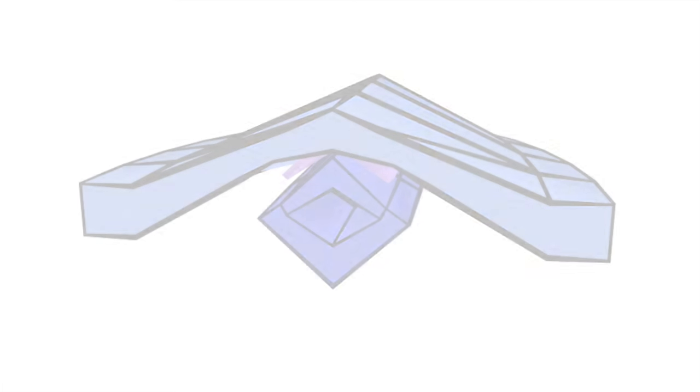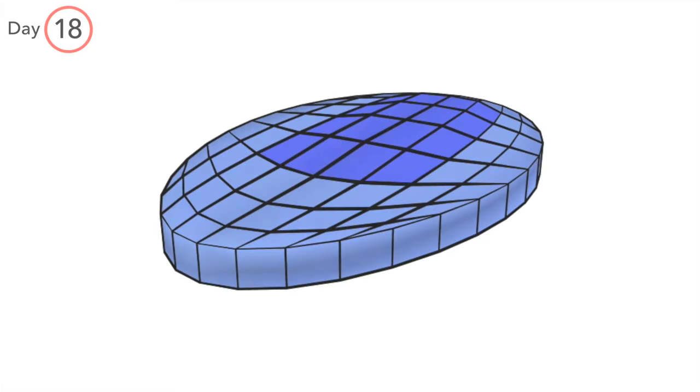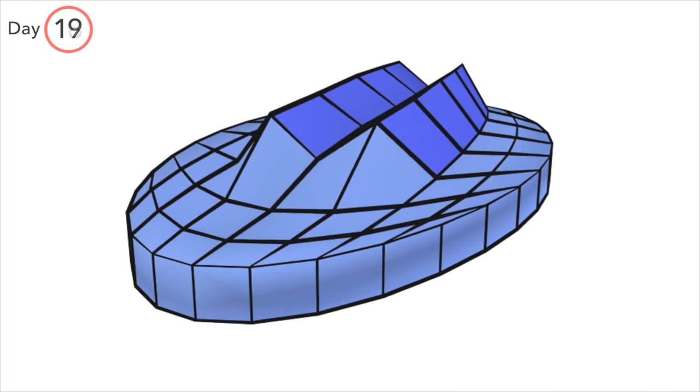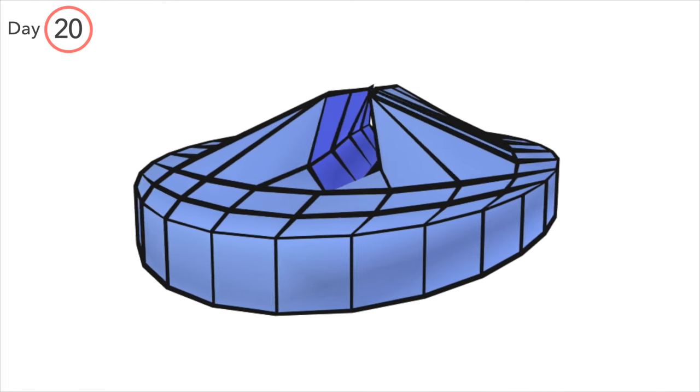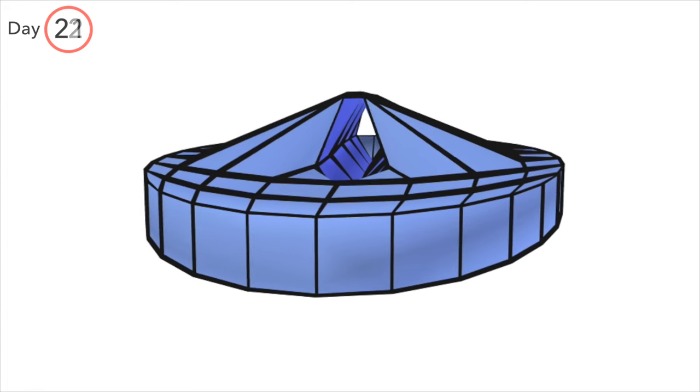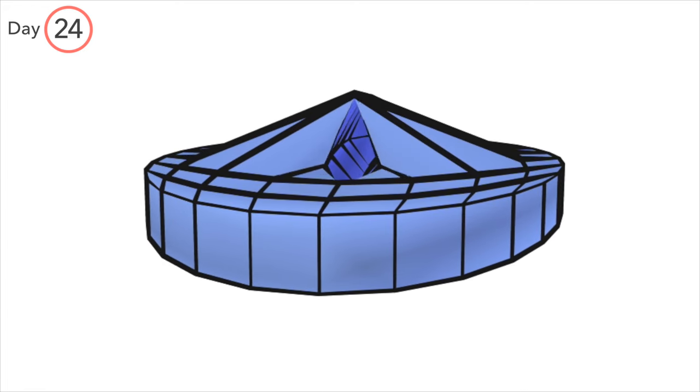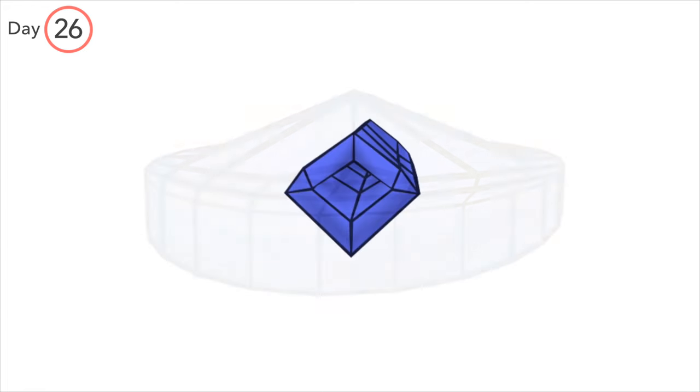To sum up, neurulation is the process of the neural plate becoming the neural tube. The closure of the neural folds begins in the center and zips up towards either end. The central nervous system is developed from the neural tube.